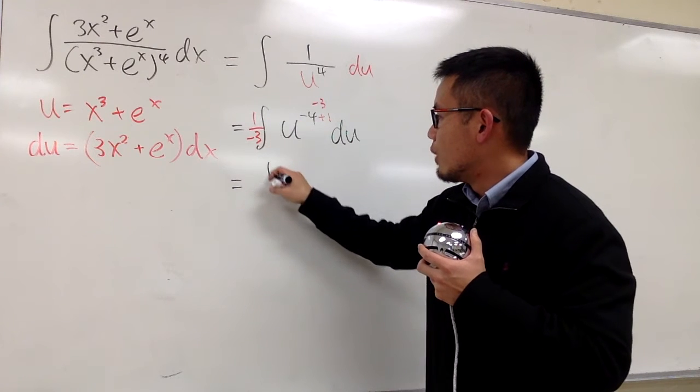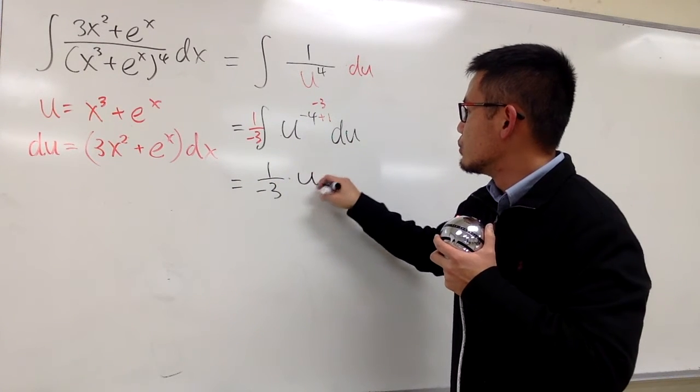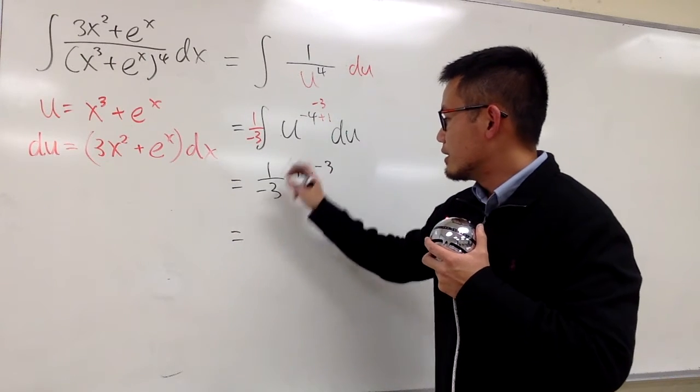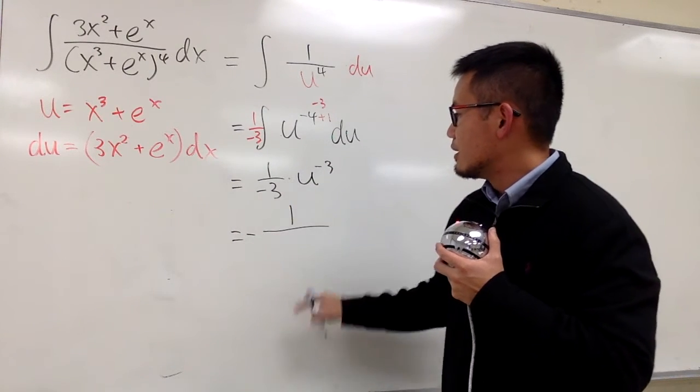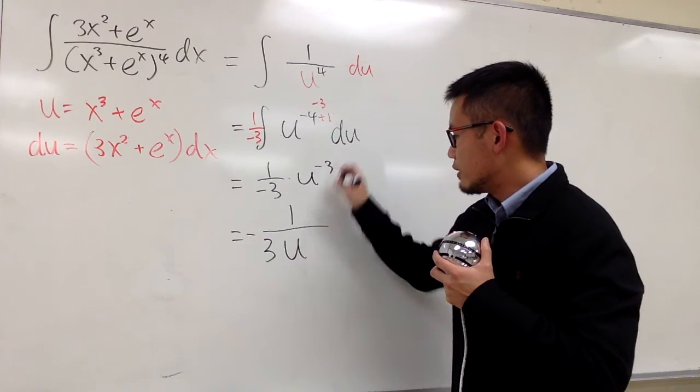At the end, you see this is 1 over negative 3 times u to the negative third power. And I can write this as 1 over, let's put a negative in the front. And the 3 is on the bottom, and then the u is on the bottom, and then to the third power.